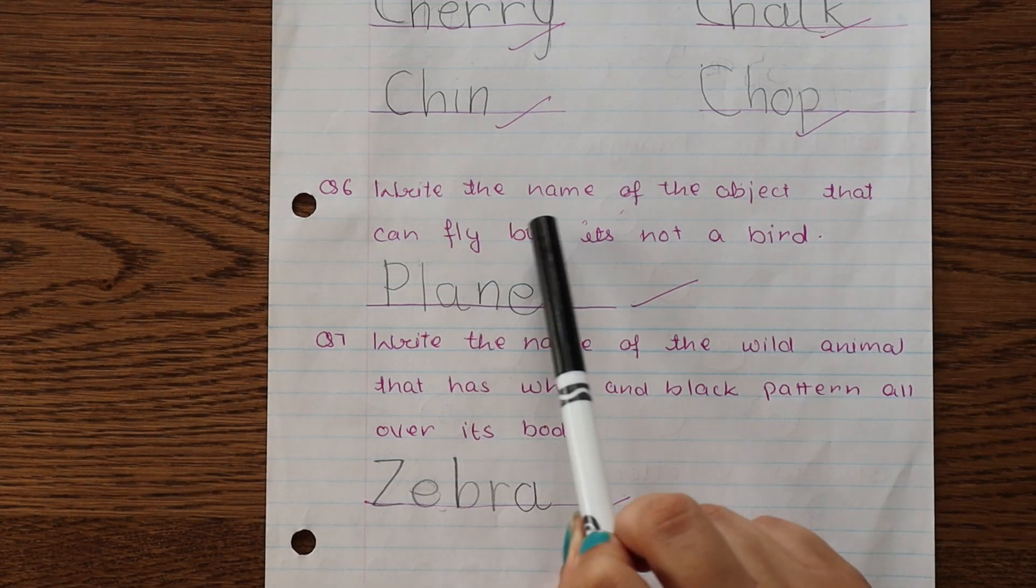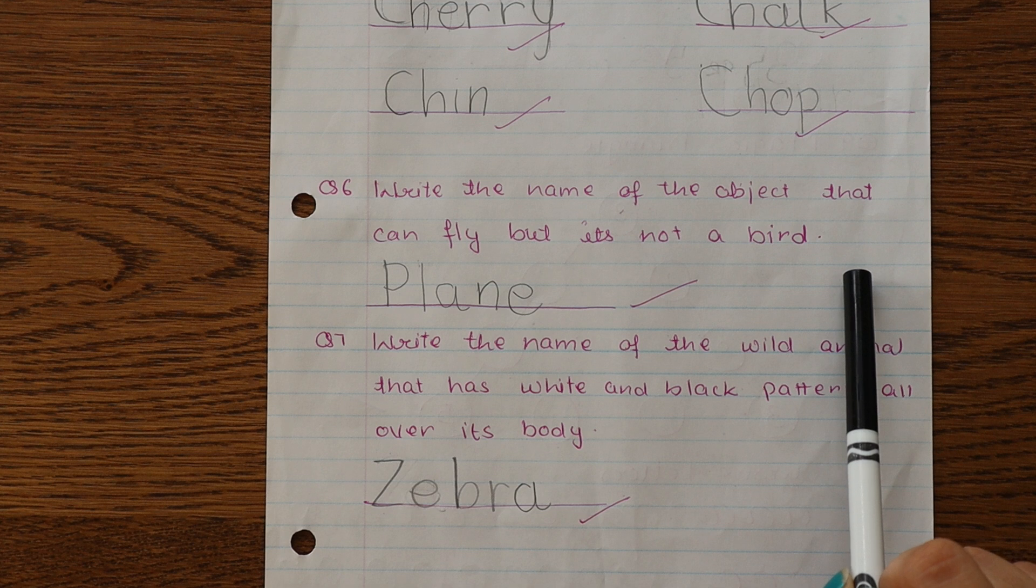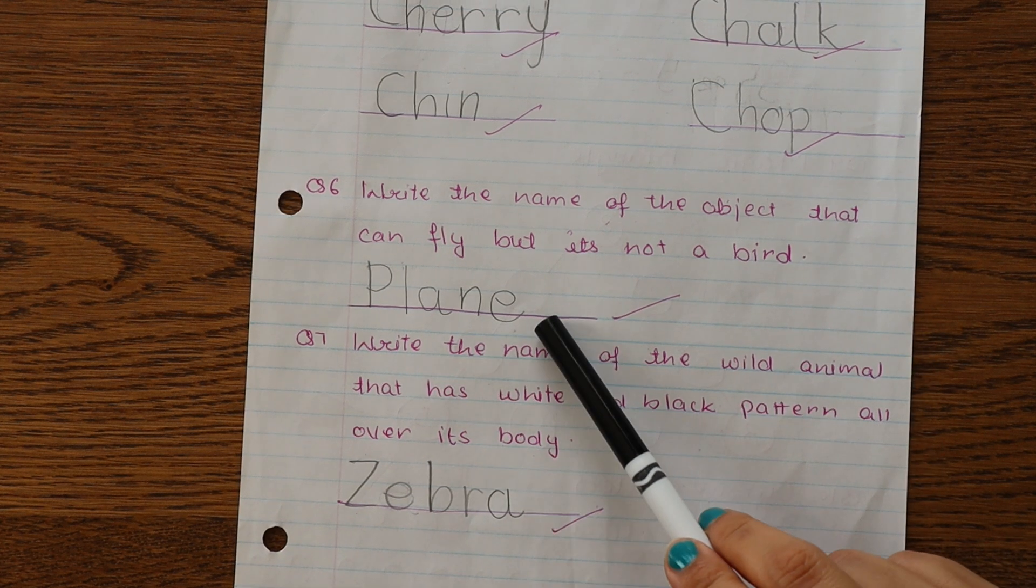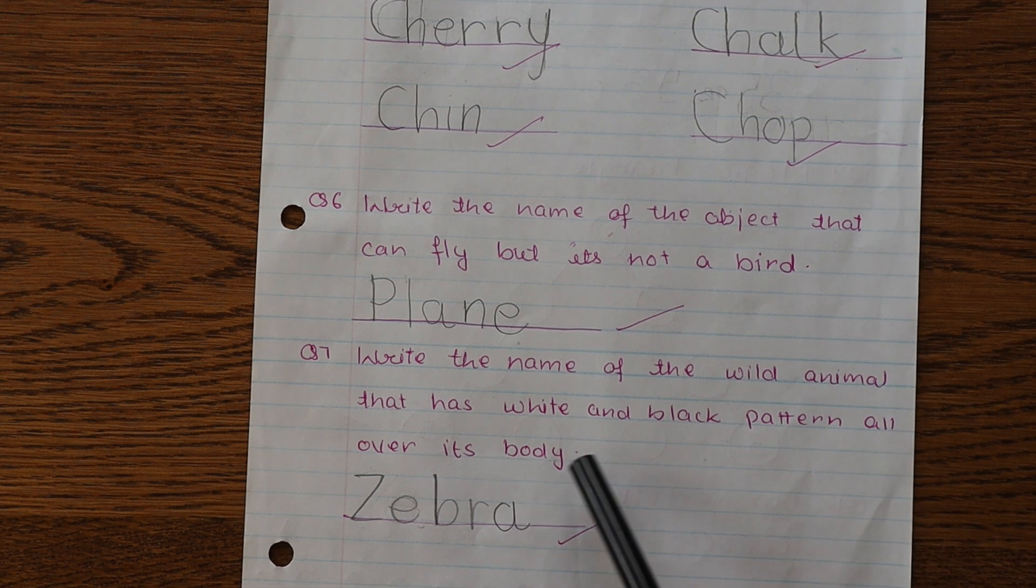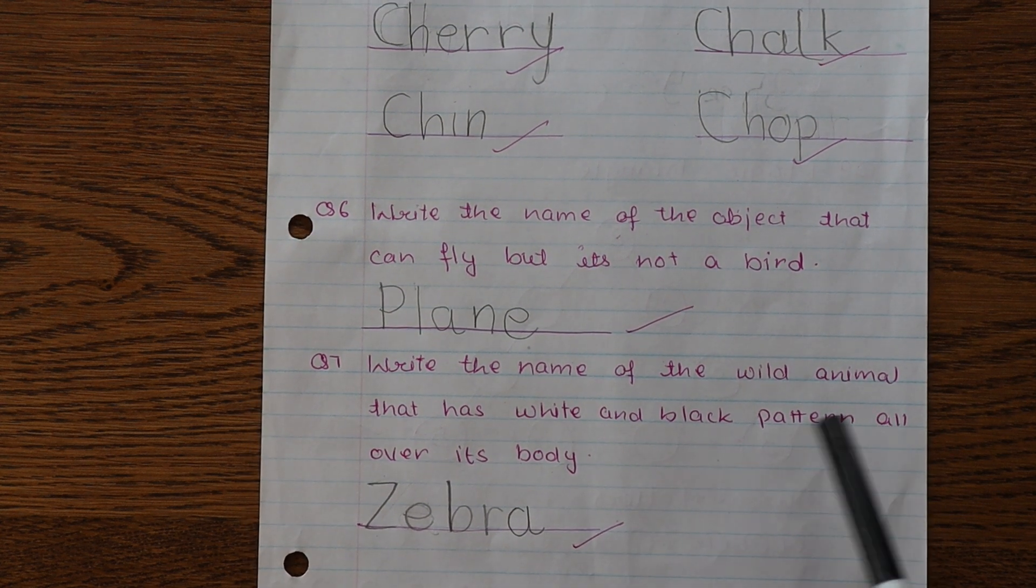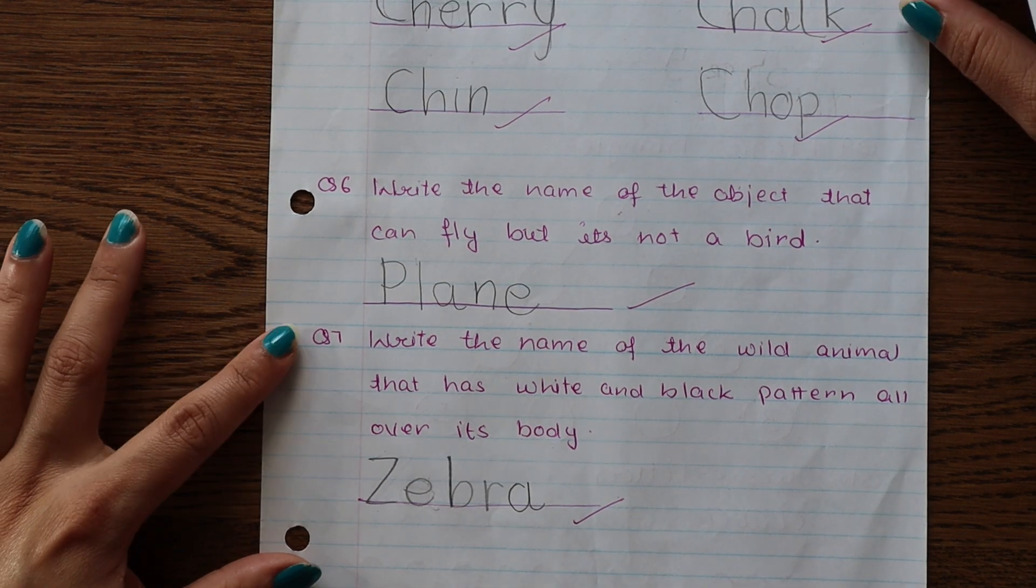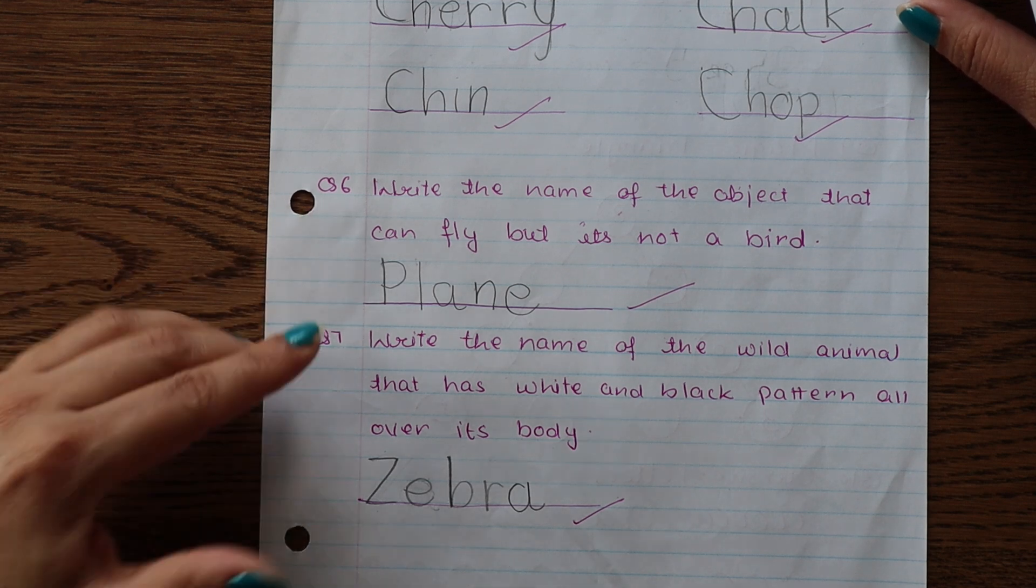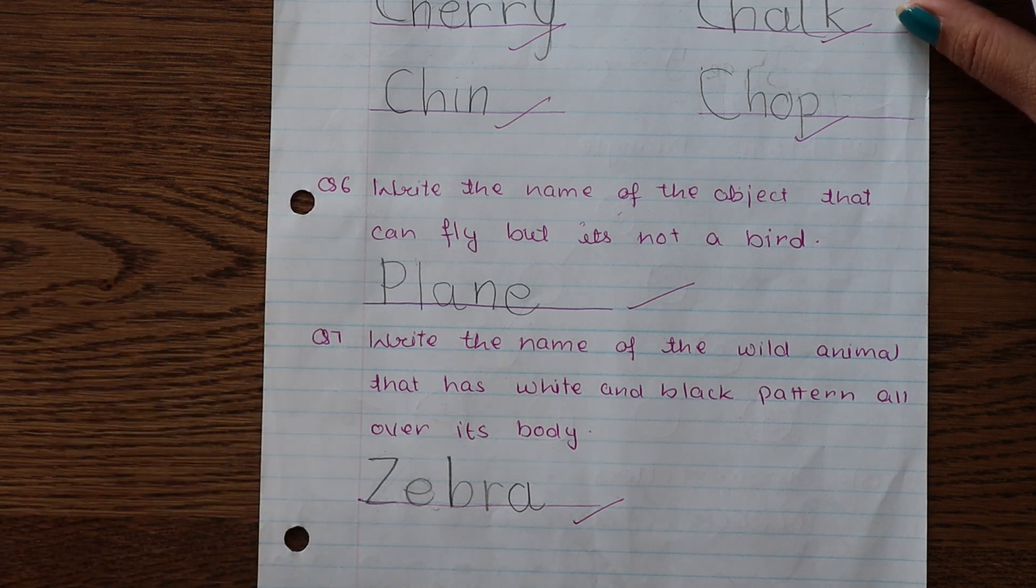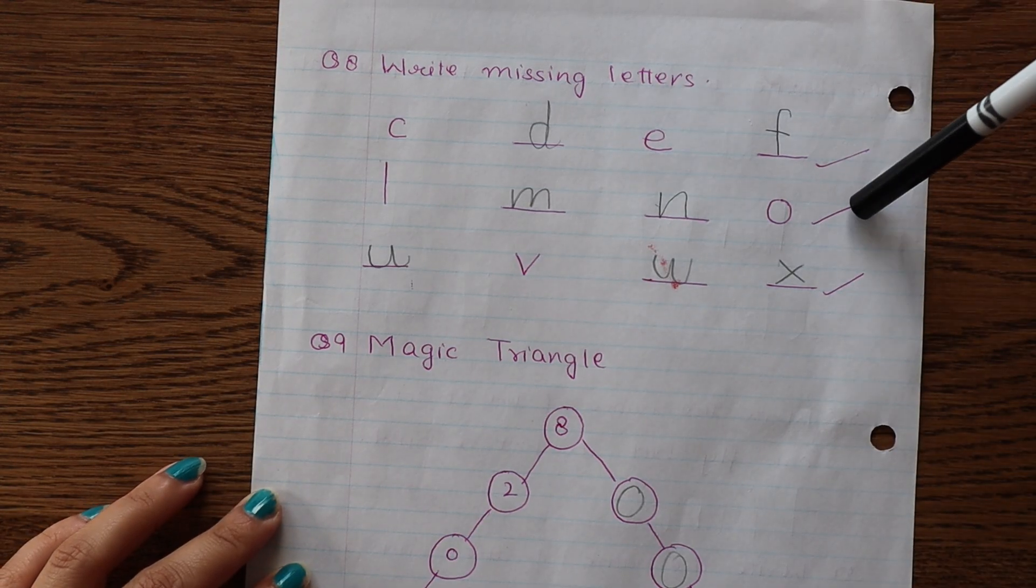Next we have write the name of the object that can fly but it's not a bird, so it's plane. Write the name of the wild animal that has white and black pattern all over its body, so it's zebra. Whenever I plan Chia's daily practice worksheets, I always make sure to include these kind of brain teasers or brain-boosting problems. And I gave this activity for lowercase letters.